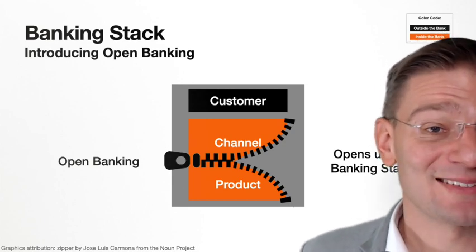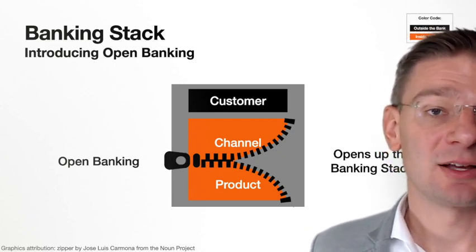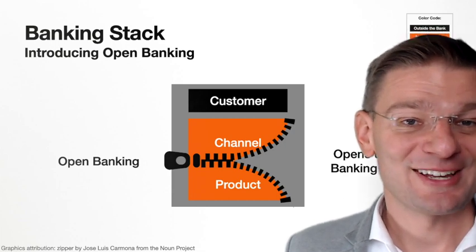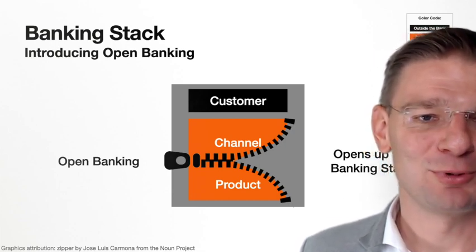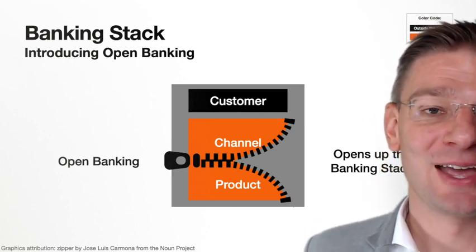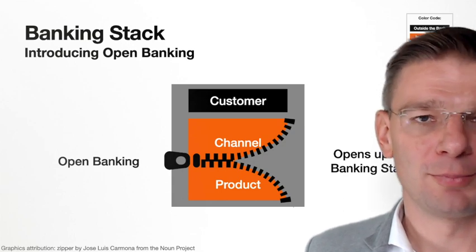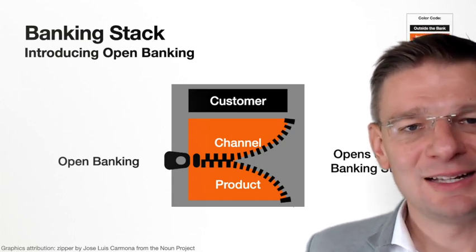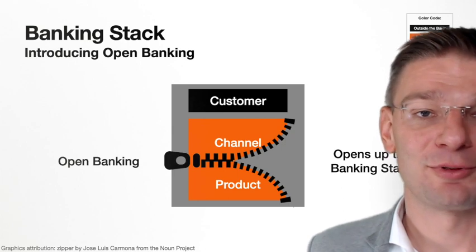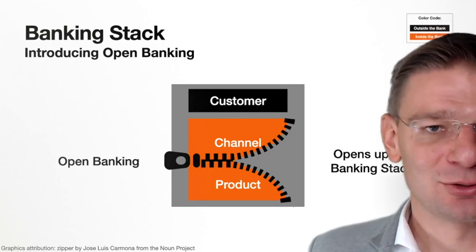For example, the basic product of the bank — such as account or payment functionality — can now be accessible via another channel. However, open banking does not open the link between channel and product completely. It's still a little bit stuck, this zipper, because you can't really have the banking product completely separated from the channel.